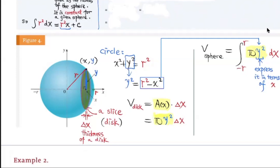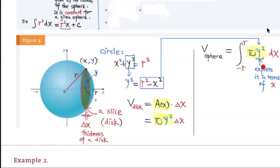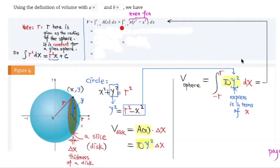We're going to sum up those disks — adding all those disks gives you the whole sphere. This corresponds to the integral of πy² dx, where x goes from negative r to r. Because we're integrating with respect to x, we express y² in terms of x. Since y² = r² − x², we substitute that in to get the integral of π(r² − x²) dx from −r to r.